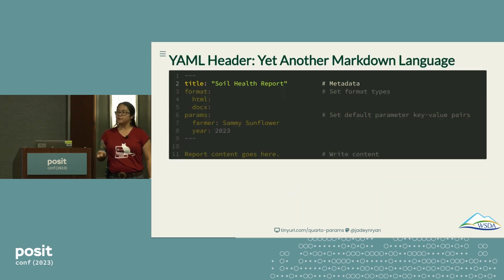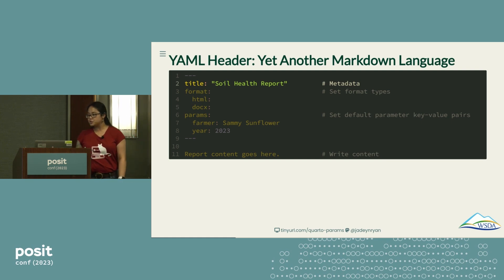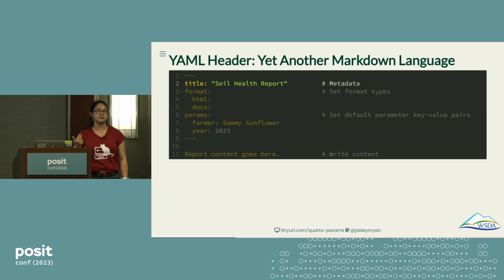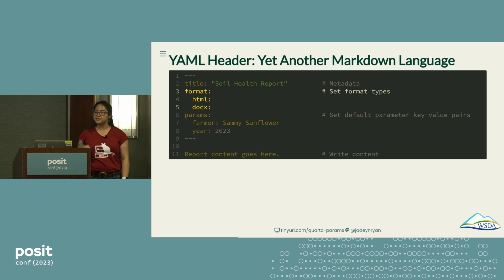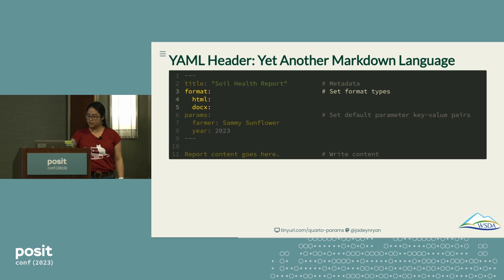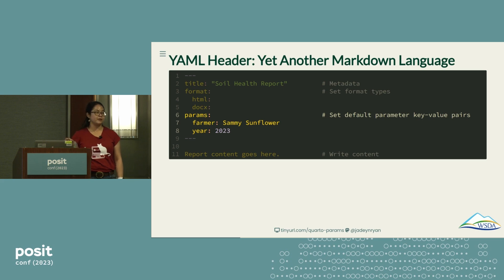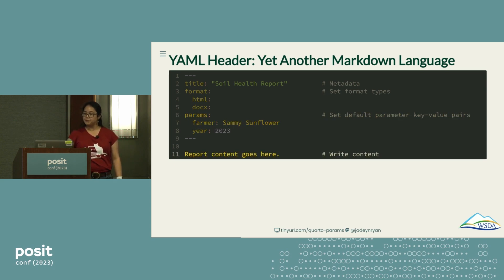For your parameterized report, you'll have a YAML header — which stands for Yet Another Markdown Language. This YAML header contains your basic metadata: title, subtitle, date, author. It's also where you specify your format types — in our case, we output to HTML and Word doc. And this is also where you set your parameters, which are key-value pairs where you name your parameters and also name the default value that will be used. Below your YAML header is your basic report content.